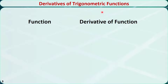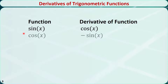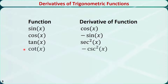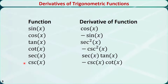Derivatives of some trigonometric functions. The derivative of sine x with respect to x is cosine x. The derivative of cosine x is minus sine x. The derivative of tangent x is secant x squared. The derivative of cotangent x is minus cosecant x squared. The derivative of secant x is secant x times tangent x. The derivative of cosecant x is minus cosecant x times cotangent x.